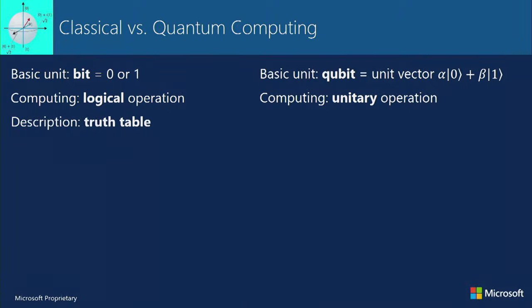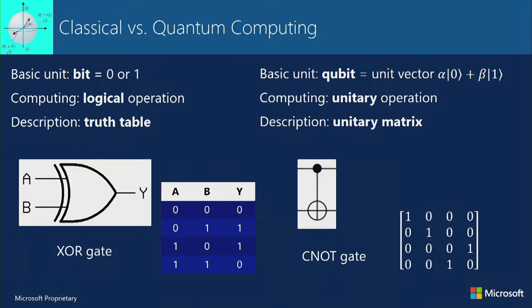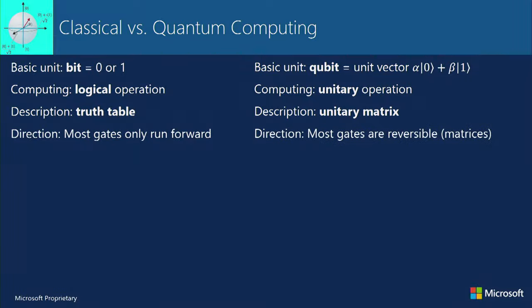Classically, we describe gates as a truth table — here's an XOR gate. Quantumly, it's still a unitary matrix; the XOR gate is a controlled-NOT gate. The two lines that come in are complex vectors, and we're combining all of that information, not just two bits. Classically, we run machines forward, gate by gate. Quantumly, it's a matrix — you can go backwards through it, so everything on the unitary side is runnable forward and backwards.